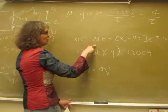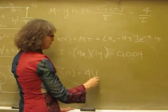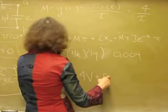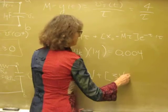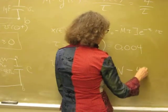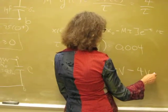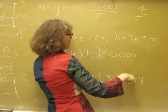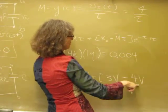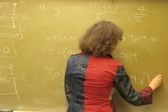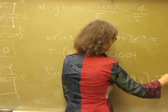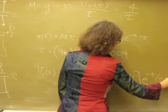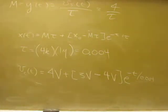Because 4 over τ times τ equals 4 volts, and X₀ we said was 3 volts. The M was 4 over τ, so this ends up being 4 volts, then e to the minus T over 0.004.